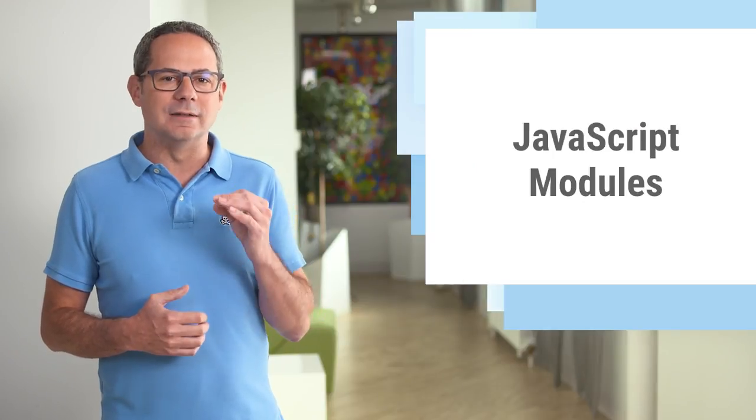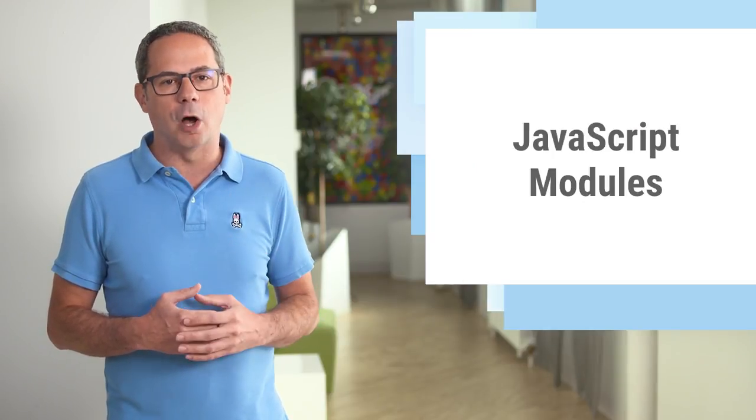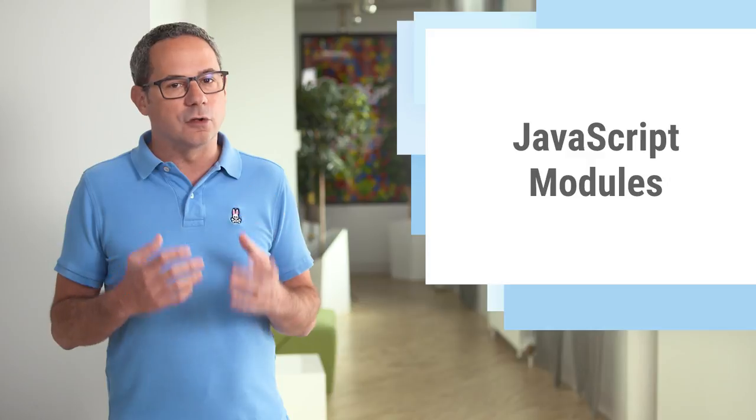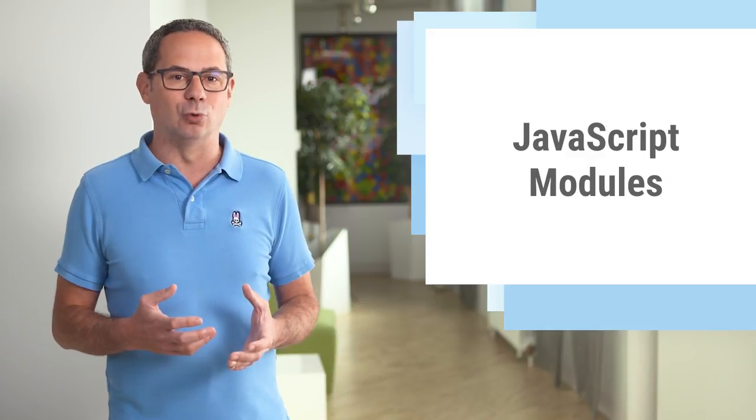Chrome 61 adds native support for JavaScript modules via the script-type-equals-module element. That makes it possible for Chrome to fetch granular dependencies in parallel, taking advantage of caching, avoiding duplication across pages, and ensuring that the script executes in the correct order.